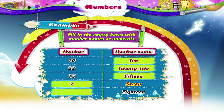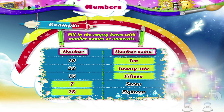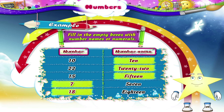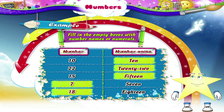So write 7 in the empty box. The number 18 is written as 1-8, that is 18. Starry, that was easy, wasn't it?